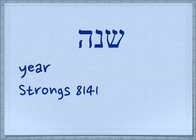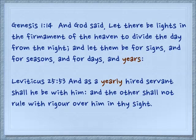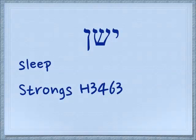As a noun, Shana means 'year,' and you probably already know that from Rosh Hashanah — the head of the year. What happens as one year passes to another? Things change. In Genesis 1:14 — 'And God said, let there be lights in the firmament of the heaven to divide the day from night, and let them be for signs and for seasons and for days and for years.' Leviticus 25:53 — 'And as a yearly hired servant shall he be with him, and the other shall not rule with rigor over him in thy sight.'